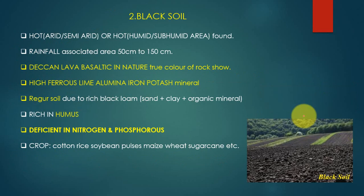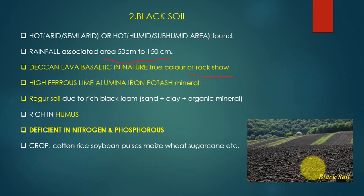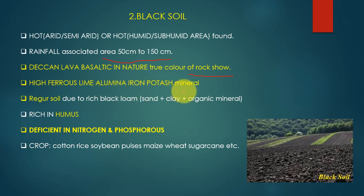Now the second soil type is black soil. This soil is associated with hot and semi-arid areas. Rainfall associated with this area is 50 to 150 centimeters. This is also known as Deccan lava or flood basaltic soil because it is basaltic in nature — reflecting the true color of the original rock. The original basaltic rock is also black. This soil is high in ferrous lime, alumina, iron, and phosphorus minerals.